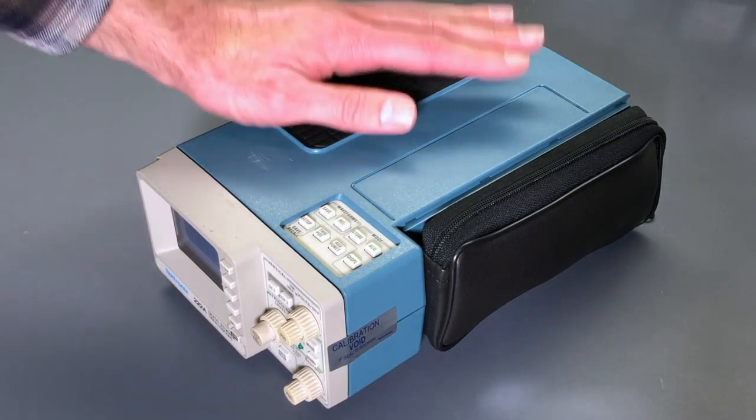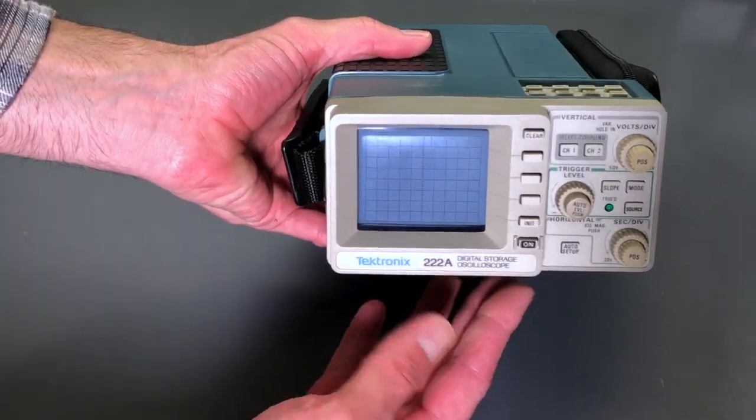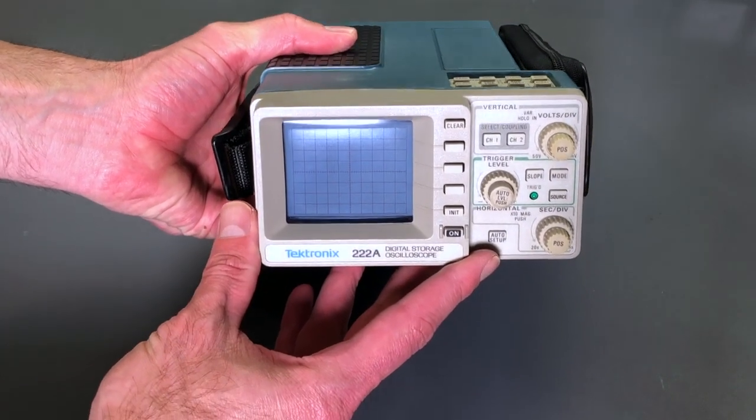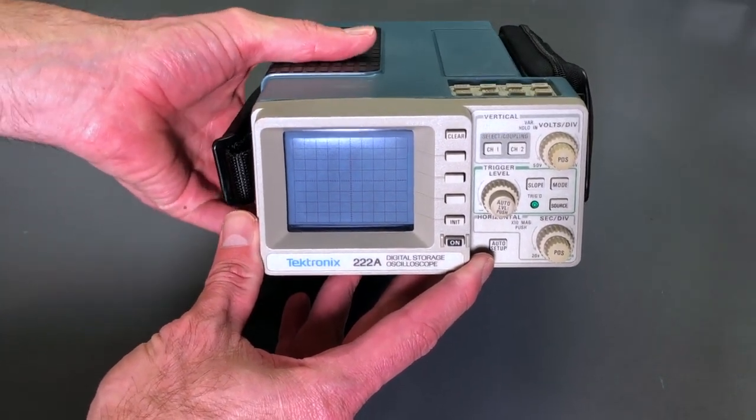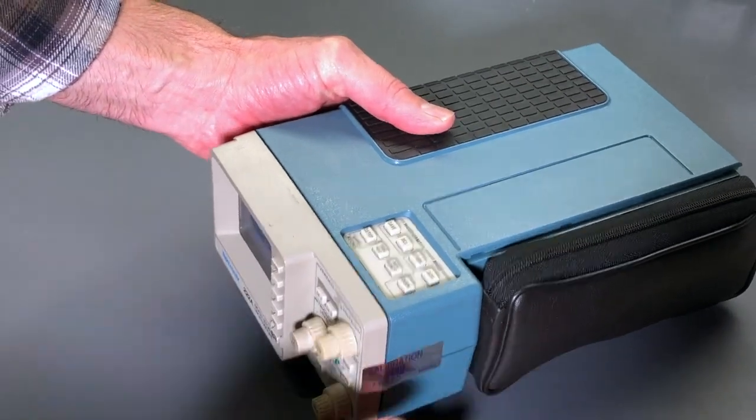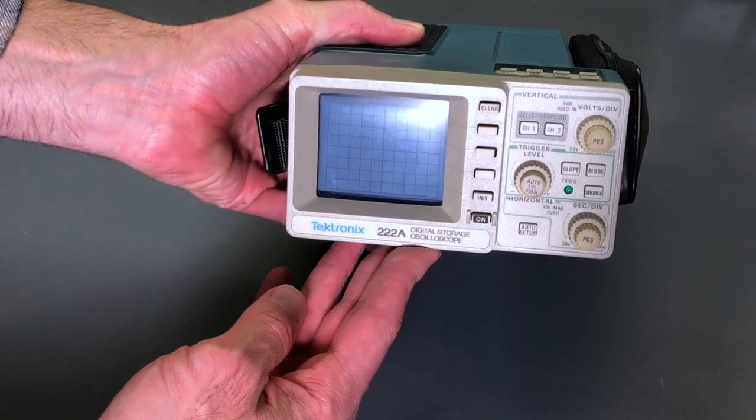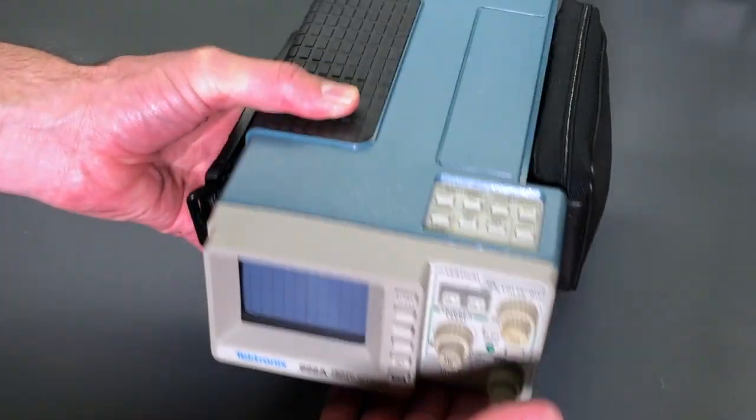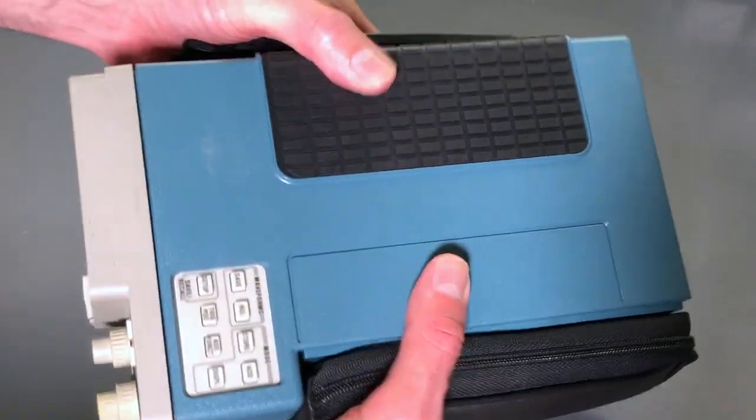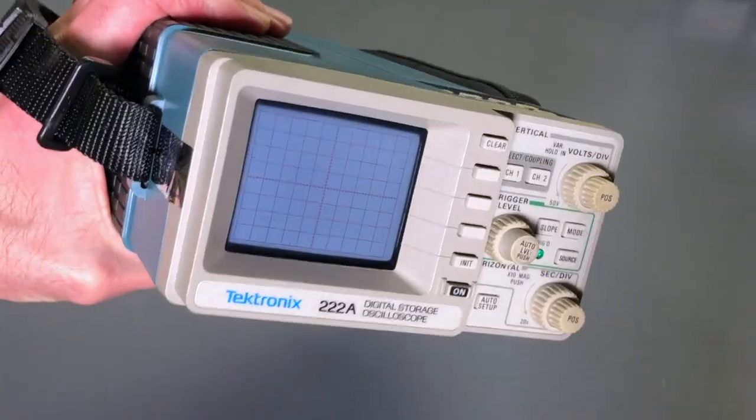If you're not familiar with these scopes, this is the 222A model and it's a 10 megahertz digital scope, and there's also the 224 model which is a 60 megahertz scope. Of course, what's not to like about something with a CRT on it and so compact and portable. Pretty cool little scope, early digital scope, really well made. Neat because you can put your hand in the holder and one-handed operation like that.